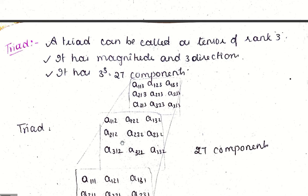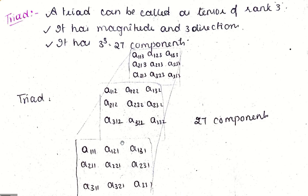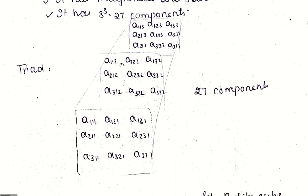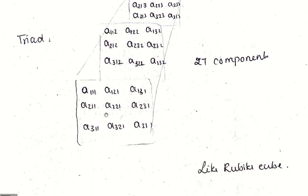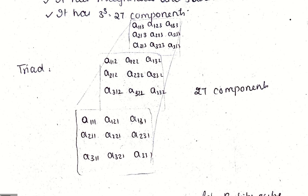Another one we have to see is what is a triad. A triad can be called a tensor of rank 3, and it has magnitude and 3 directions. It has 3^3 because rank is 3, so it has 27 components. These are the components it will be having.